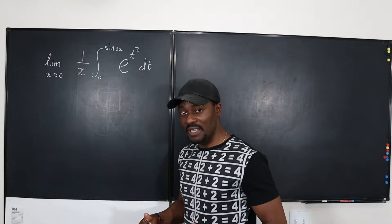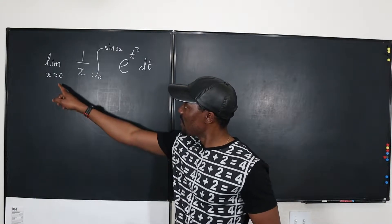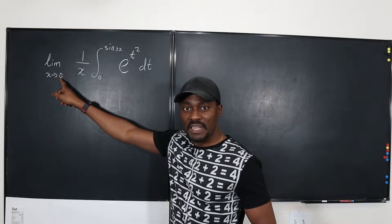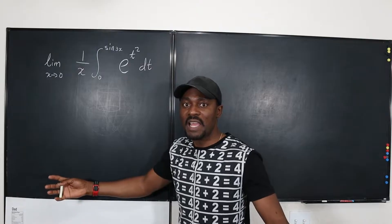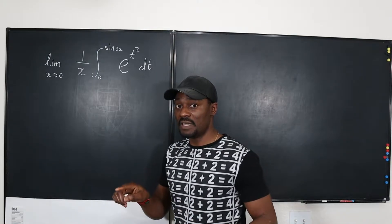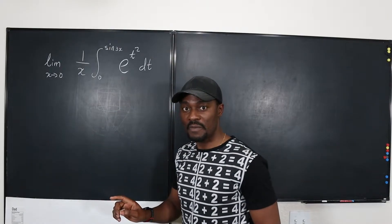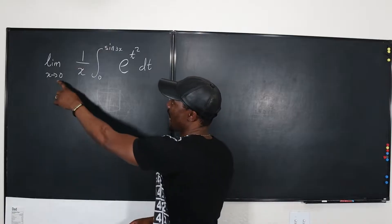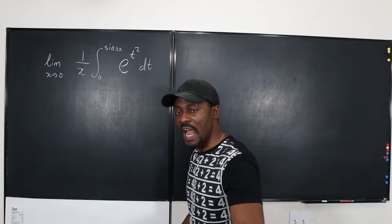Generally, when you see a limit problem where x is going to a finite number like 0, 1, 4, pi, or whatever — because it is a real number and not infinity — the first move is always to plug in the values. So what you're going to do first is plug in x equals 0 into this function. Let me show you what's going to happen.